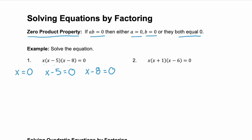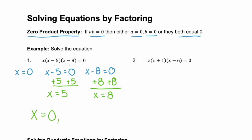The first factor is already solved: x equals zero. The second factor, if we add 5 to both sides, we see that x minus 5 becomes zero whenever x equals 5. And the third factor, if we add 8 to both sides, the binomial x minus 8 would be zero whenever x equals 8. That tells us our possible answers for x are zero, five, or eight.